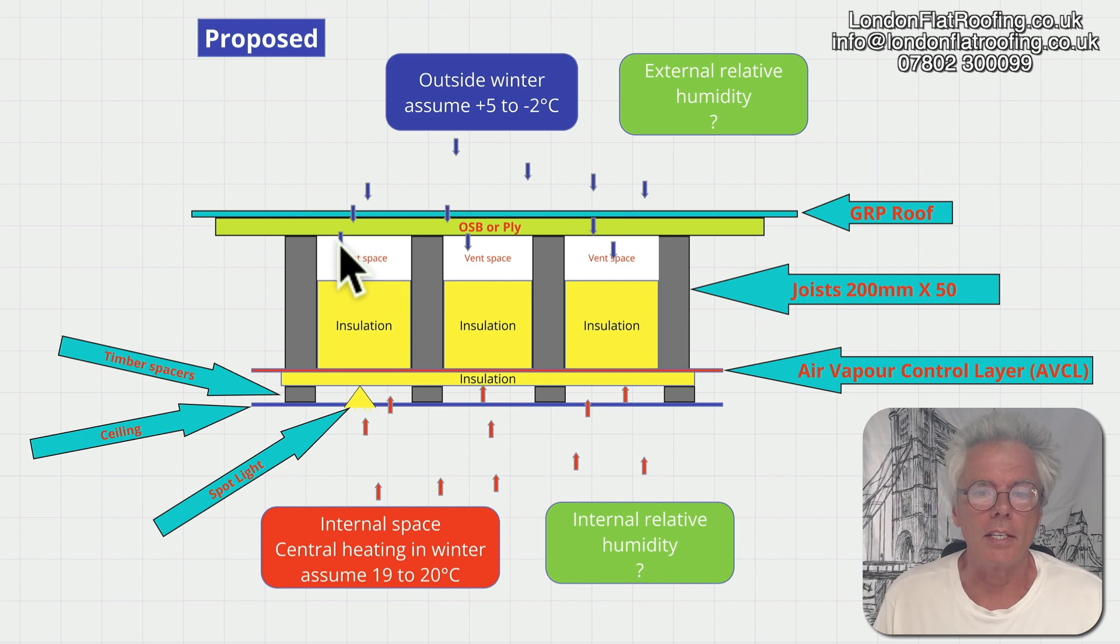He's going to put insulation in between and try to put some kind of through ventilation so that he can get any moisture out of these gaps. One of the most important parts is the air vapor control layer, continuous running right across. The most important part is not how much vapor it stops going up, but the air vapor control. It's an air block stopping any movement of air. There's a lot more vapor in a hole allowing air to go through than will be stopped by the vapor resistance of the material.